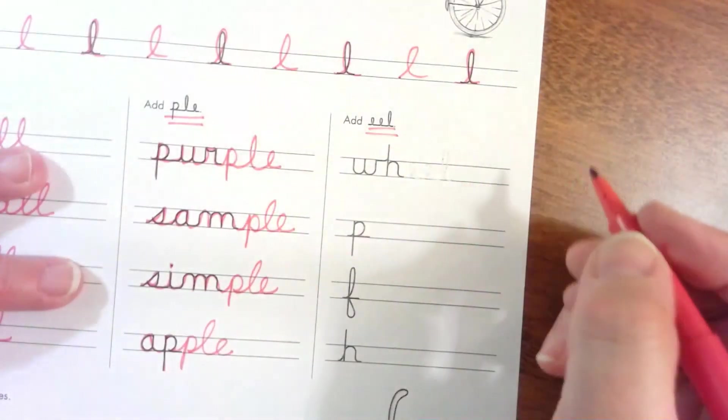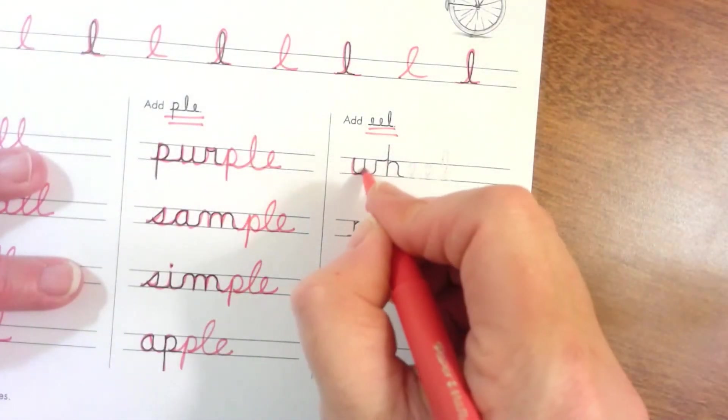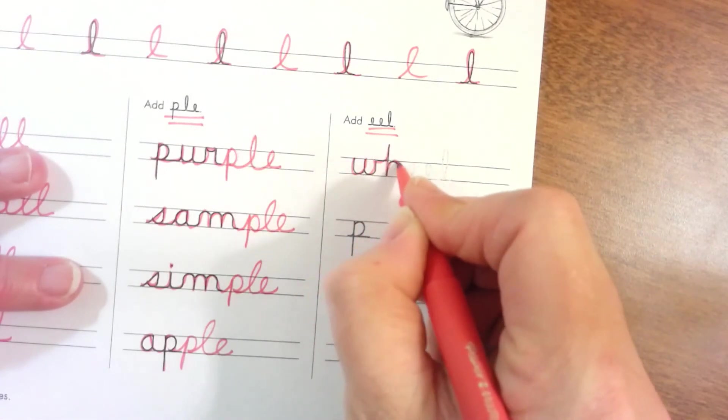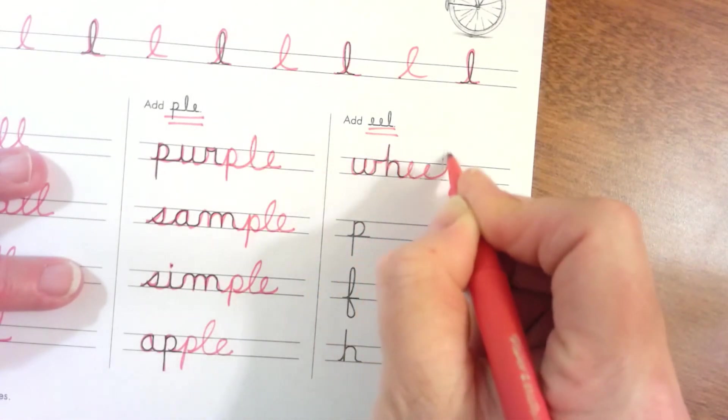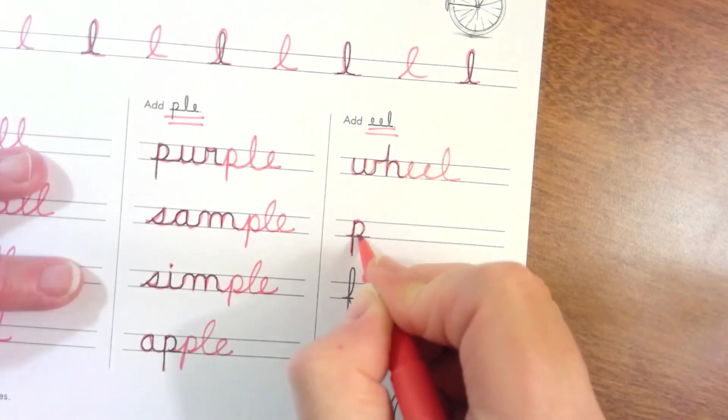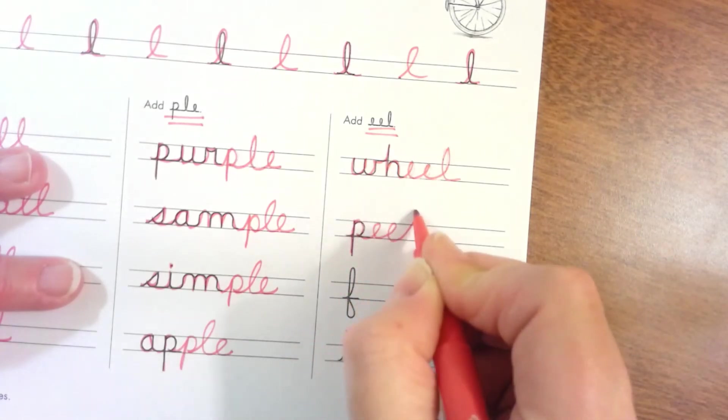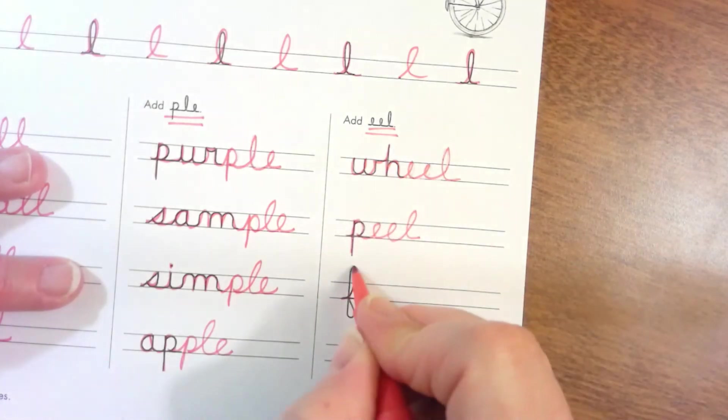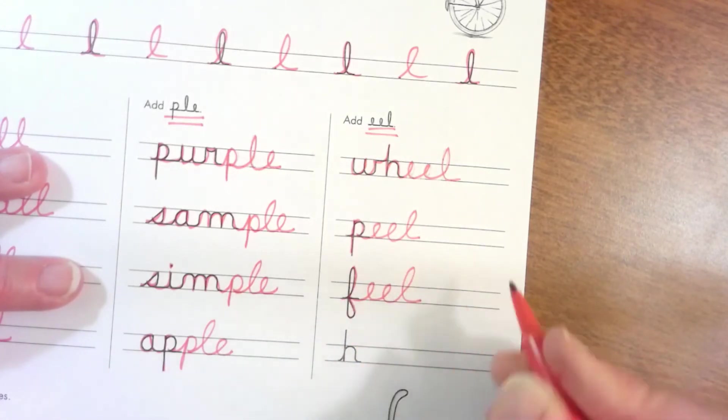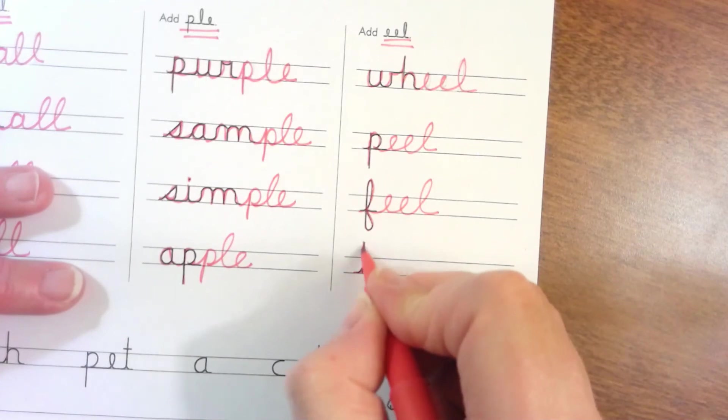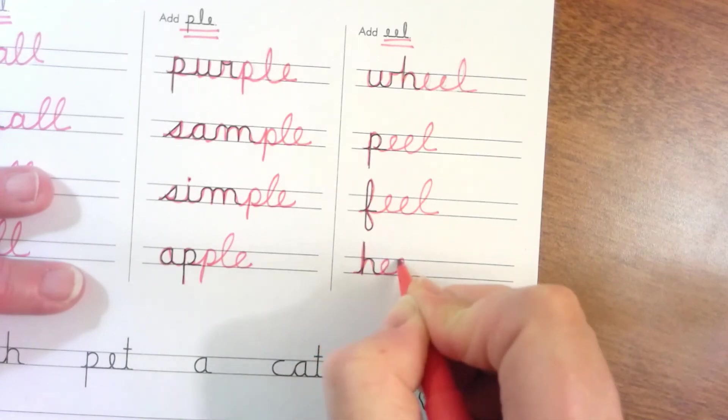They want us to add 'eel'. This is a W. Wheel. Peel. Peel. Feel. Feel. Heel, H-E-E-L. Heel.